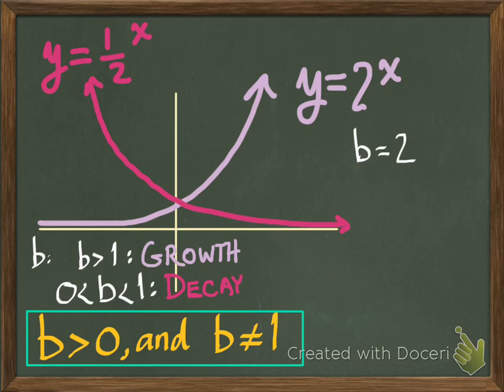Just briefly, if you thought about having a base equal to 1, what is 1 to the x look like, do you think? 1 to any power always equals 1. So we could have a base equal to 1, but it would just be a flat horizontal line, y equals 1. So it's of no value in terms of exponential functions or exponential growth or decay. And the same kind of thing happens if you let b, the base, equal 0. 0 to any power is still 0, kind of an odd little thing that 0 and 1 share that when you raise them to any power, they don't change. It's kind of cool. And so we're never going to let b equal 1 or 0.